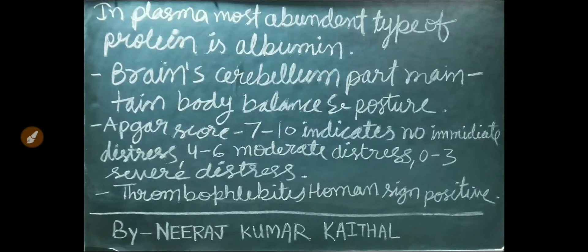In plasma, the most abundant type of protein is albumin. The cerebellum maintains body balance and posture. Apgar score 7–10 indicates no immediate distress. Apgar score 4–6 indicates moderate distress. Apgar score 0–3 indicates severe distress.